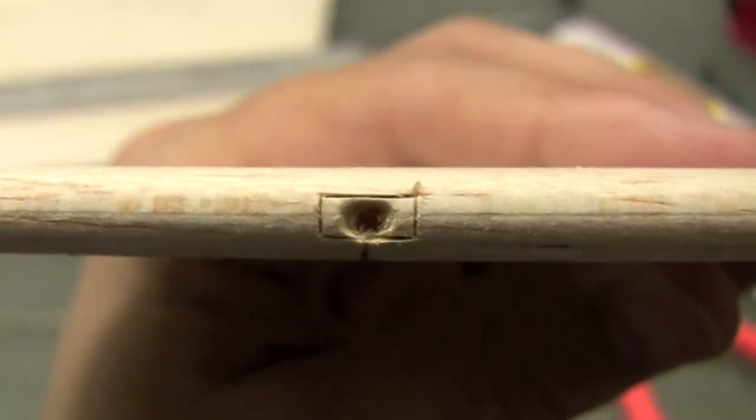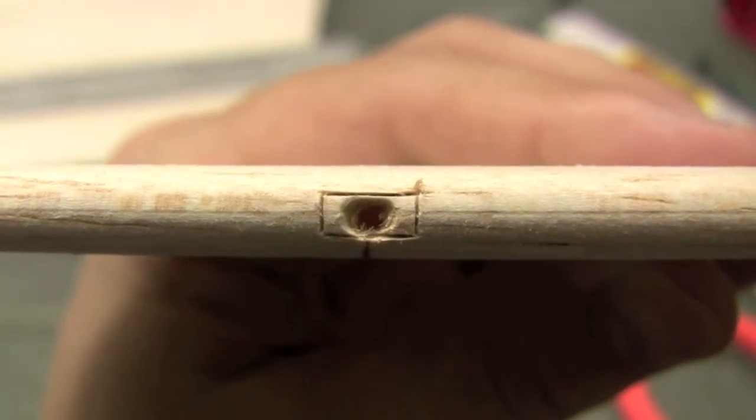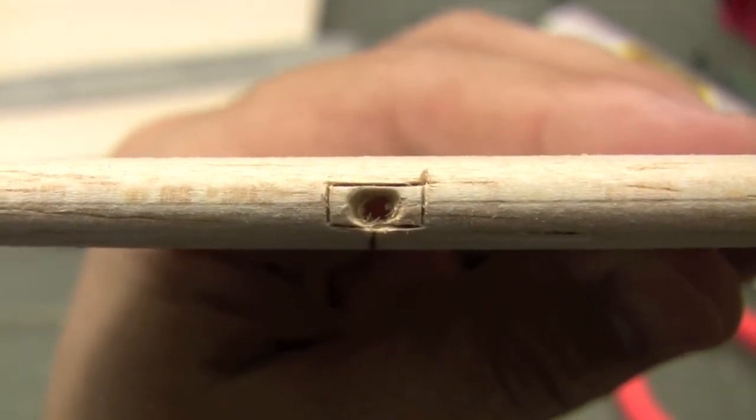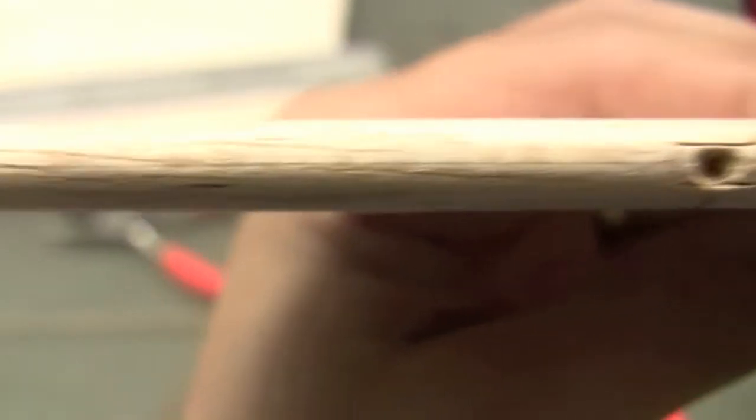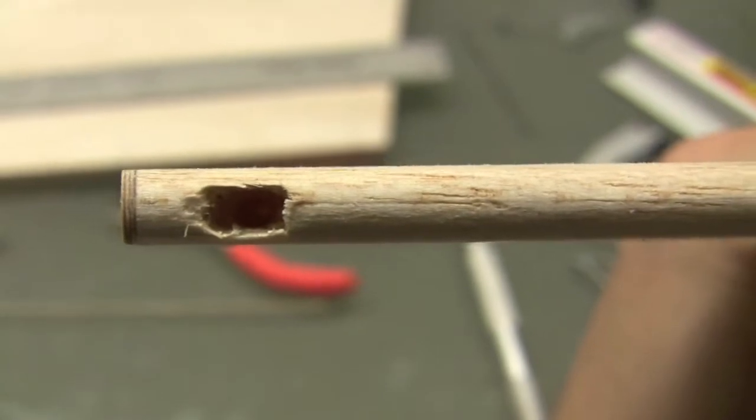Then I just take my exacto knife and start carving it out, trying to get the same shape as the hinge itself. What you'll end up with is a hole like that. You want to make sure that the holes of the aileron that the rod is going to go through is lined up with that center line.